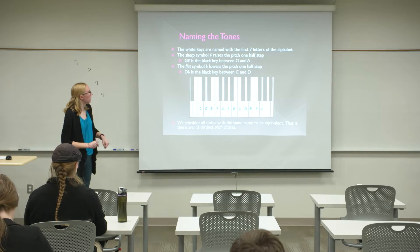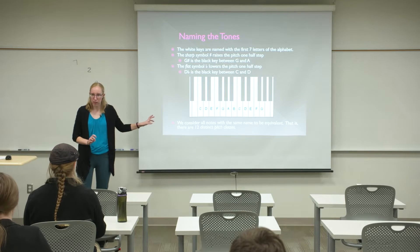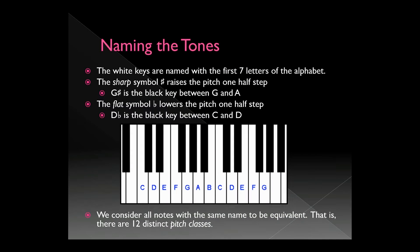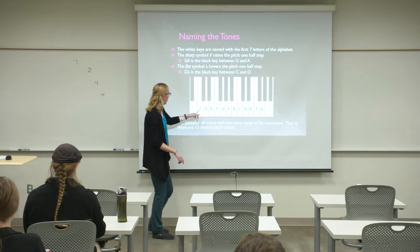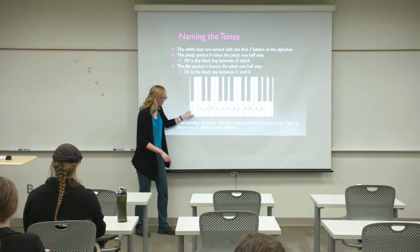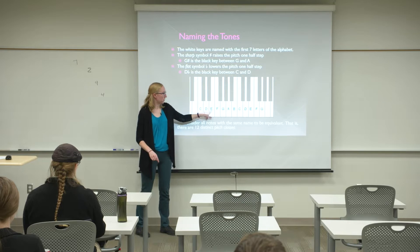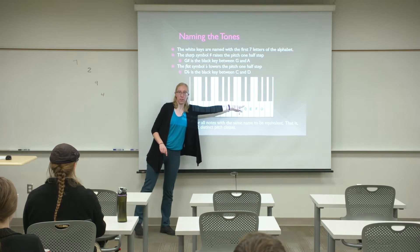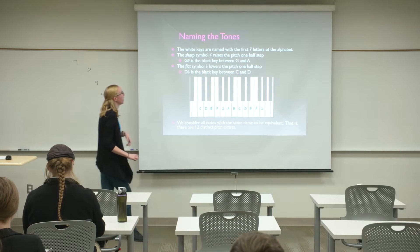We name the white keys using the letters A through G, and then they repeat. So starting here: A, B, C, D, E, F, G, A, B, C, D, E, F, G, and so on. We also have sharp and flat symbols in music to name the black keys.